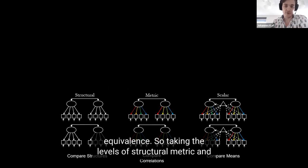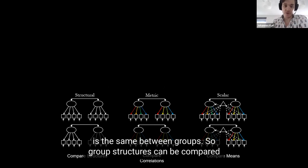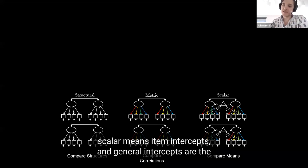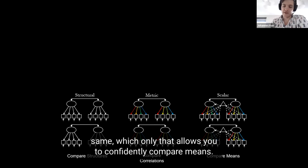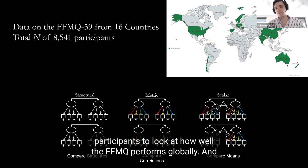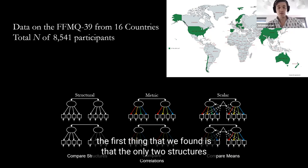Structural means the structure is the same between groups so group structures can be compared. Metric means that item loadings on the latent variables are the same so you can compare correlations. And scalar means item intercepts and general intercepts are the same, which allows you to confidently compare means. We got data from around 16 countries, around 8,500 participants, to look at how well the FFMQ performs globally.